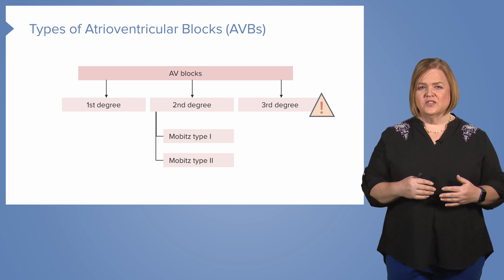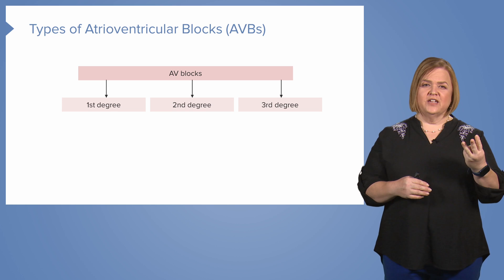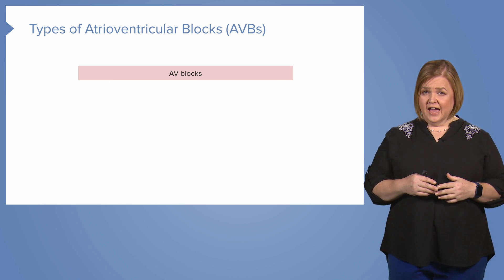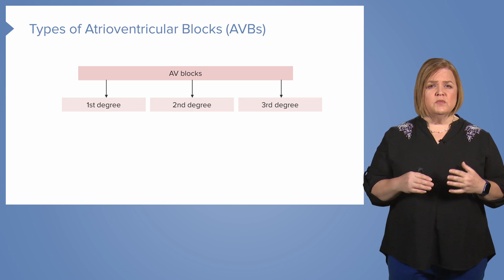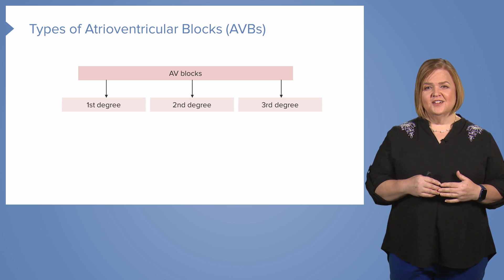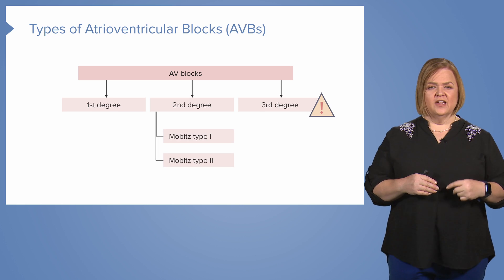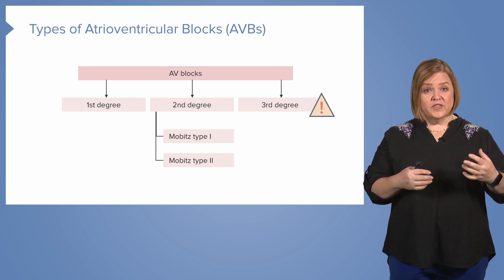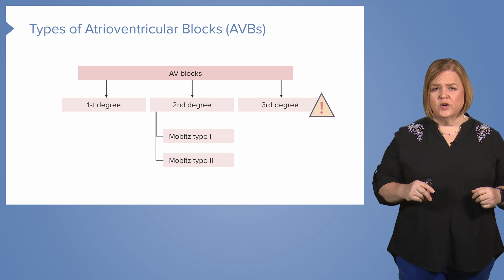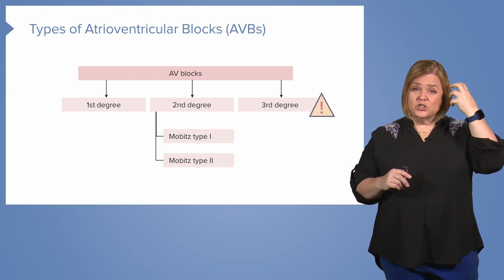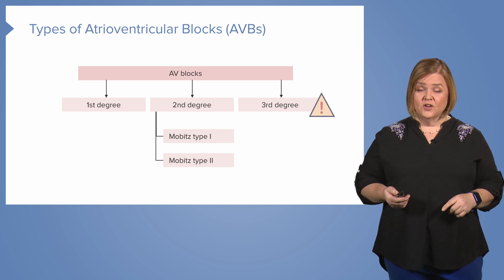Let me ask you a few questions — pause and recall. How many types of AV blocks are there? Right, three. What are the names? First degree, second degree, third degree. Which is the most serious? Third degree. Which category has two types? Second degree — Mobitz type one and Mobitz type two. That exercise is a great study technique: look away from your notes, ask yourself questions, and force your brain to retrieve information so you can build strong connections and recall it on a test or when caring for a patient.